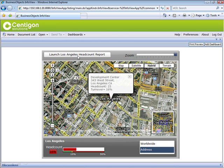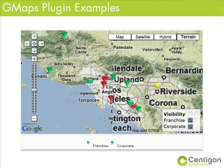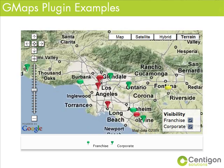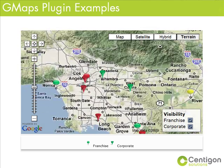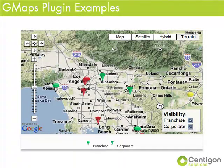Leveraging the powerful Google Maps Premier API, G-Maps Plugin Enterprise will easily scale as you deploy dashboards through a secure BI portal, internal websites, or through the Internet. From regional performance indicators to real-time analytics at city or address level, G-Maps Plugin facilitates geographic focus using powerful Google Maps APIs.